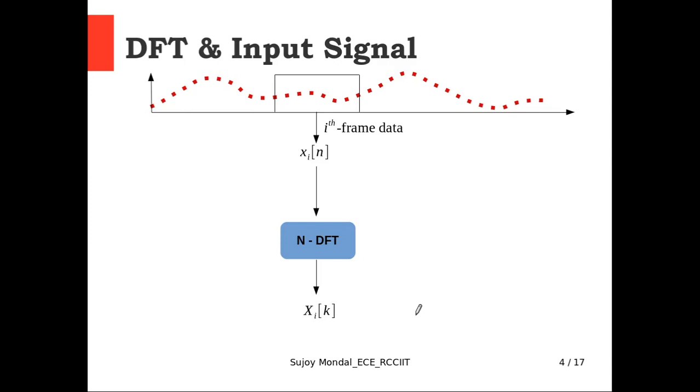The relationship between DTFS coefficients and DFT coefficients is just one scaling factor that is 1 upon N. Now if we just talk about DFT and input signals, in general the input signals are long data sequences. Once we want to compute the DFT of the input signals, we generally frame into smaller sections. We are considering any arbitrary ith frame data which contains N number of samples, then we are passing through DFT block to create the corresponding DFT spectrum.